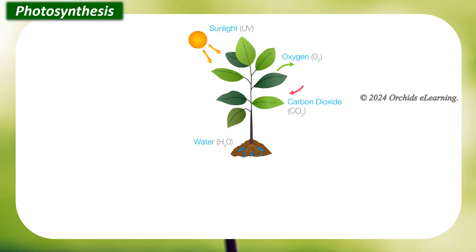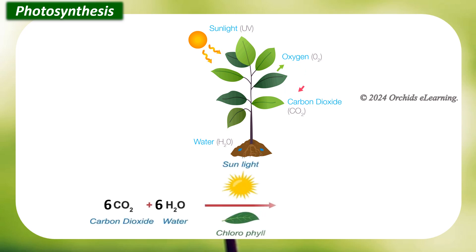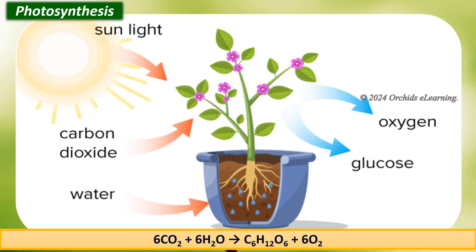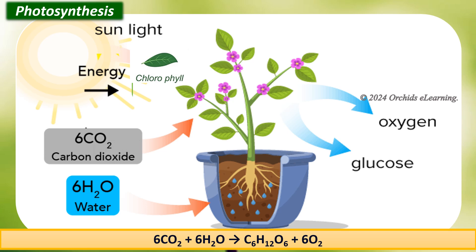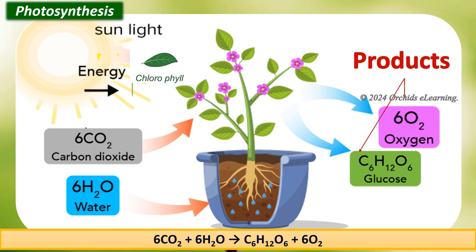The chemical equation for photosynthesis is: 6CO₂ + 6H₂O → C₆H₁₂O₆ + 6O₂. This means that the reactants — six carbon dioxide molecules and six water molecules — are converted by light energy captured by chlorophyll into a sugar molecule and six oxygen molecules, which are the products.